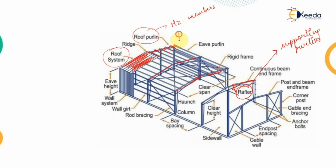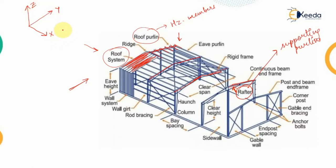There will be vertical loads due to self-weight of the structure and possible live loads from roof accessibility. Wind may blow in the x or y direction. A lateral force acts in one direction, and a longitudinal force in another, and because of these forces there will be certain deflection in the geometry of the truss.